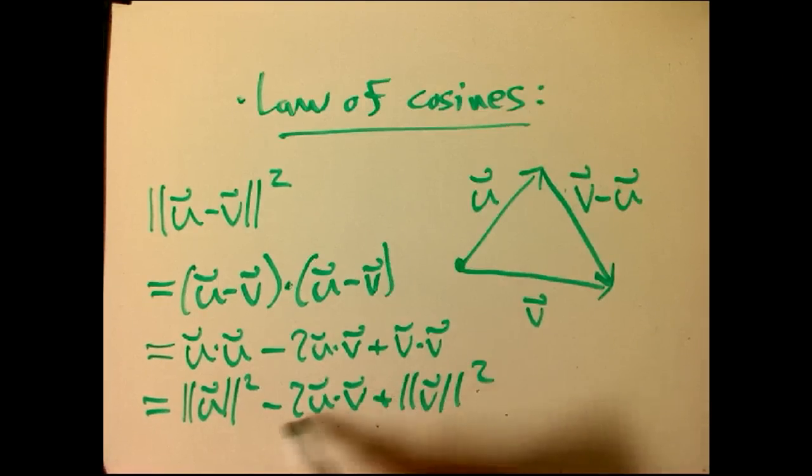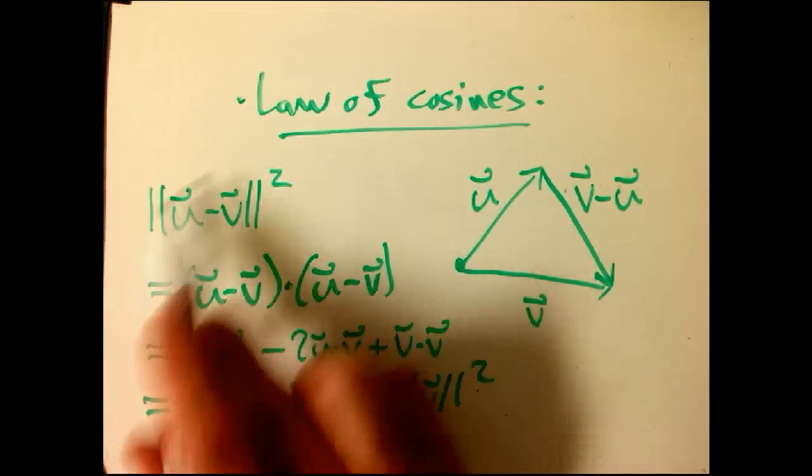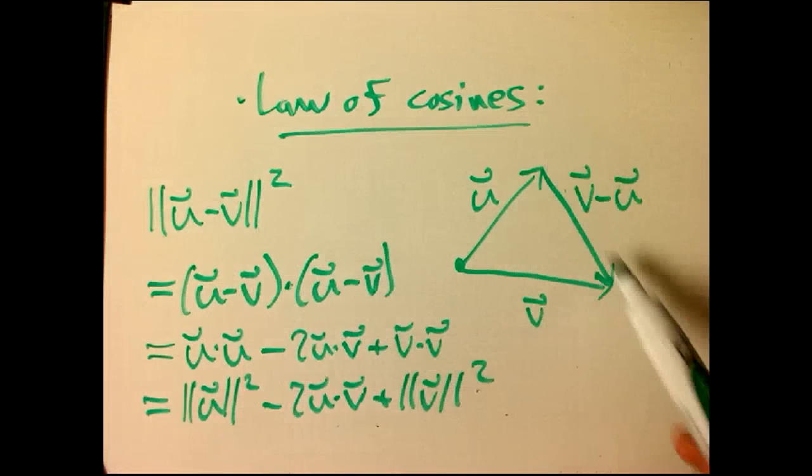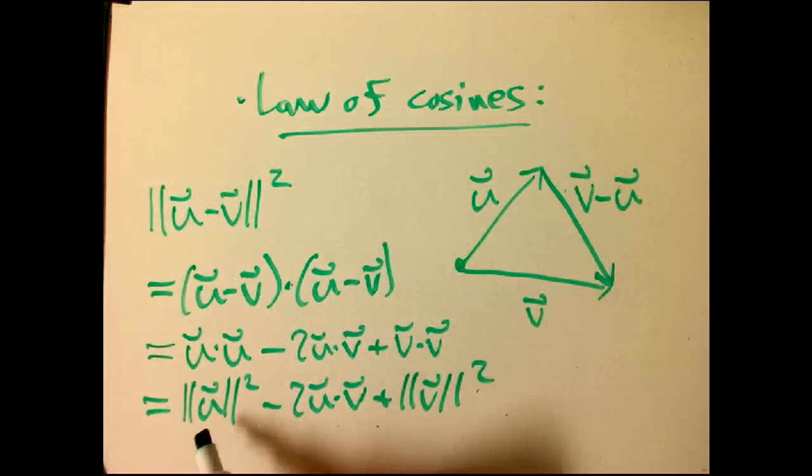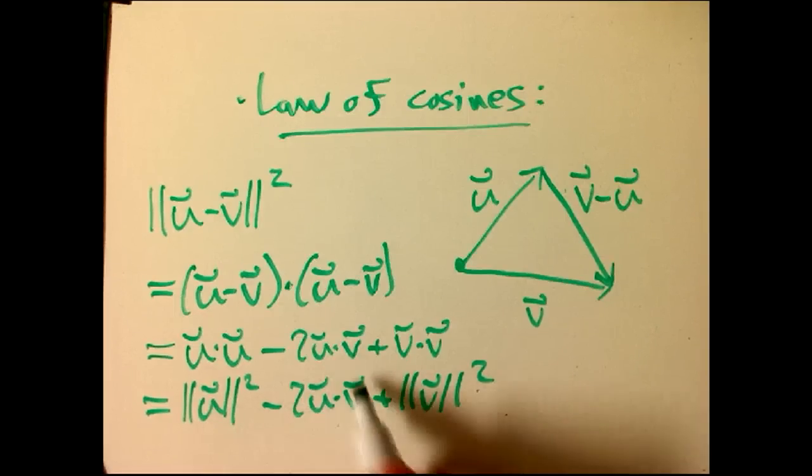And that's a magnitude squared. And what's left over is the dot product of u and v. Okay, so, what this says is that the magnitude, the length squared of the third side of any triangle is the sum of the other two, squares of the other two sides, minus 2 times something.